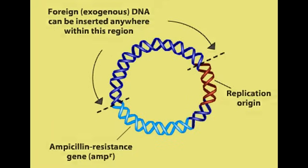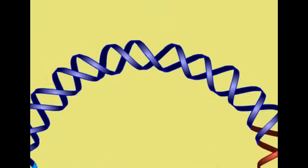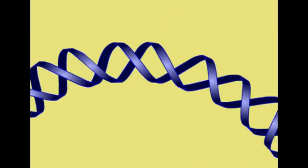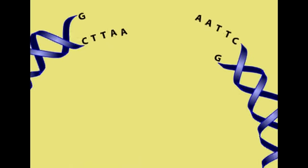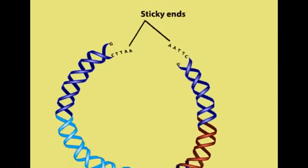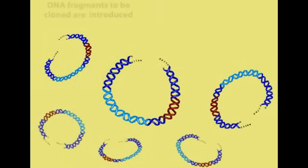To insert foreign DNA, we must first use a restriction enzyme to cleave the vector at the cloning site. Here, ECO-R1 cleaves the palindromic sequence GAATTC to produce single-stranded ends called sticky ends. These can hybridize with any piece of DNA that has also been cut with ECO-R1.